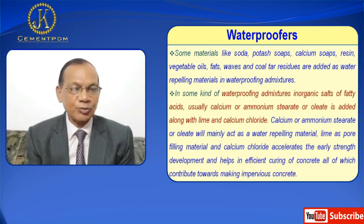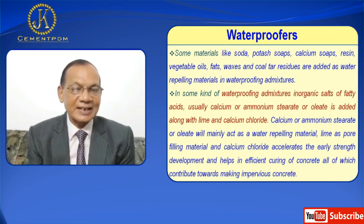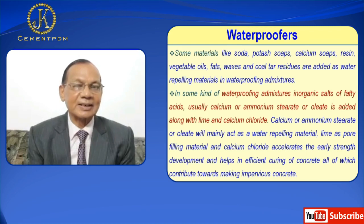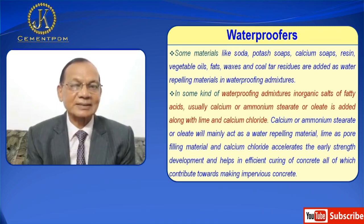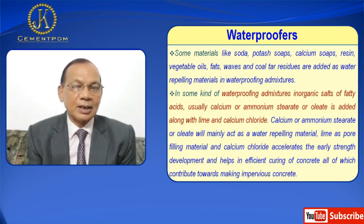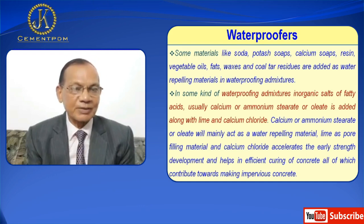In some kinds of waterproofing admixture, inorganic salts of fatty acids — usually calcium or ammonium stearate or oleate — are added along with lime and calcium chloride. The stearate or oleate acts mainly as a water repellent, lime as a pore filling material, and calcium chloride accelerates early strength development and helps in efficient curing of concrete, all of which contributes to making it impervious.